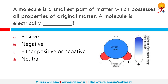A molecule is the smallest part of matter which possesses all properties of the original matter. A molecule is electrically neutral. By definition, a molecule is an electrically neutral group of two or more atoms held together by chemical bonds. Molecules are distinguished from ions by their lack of electrical charge.